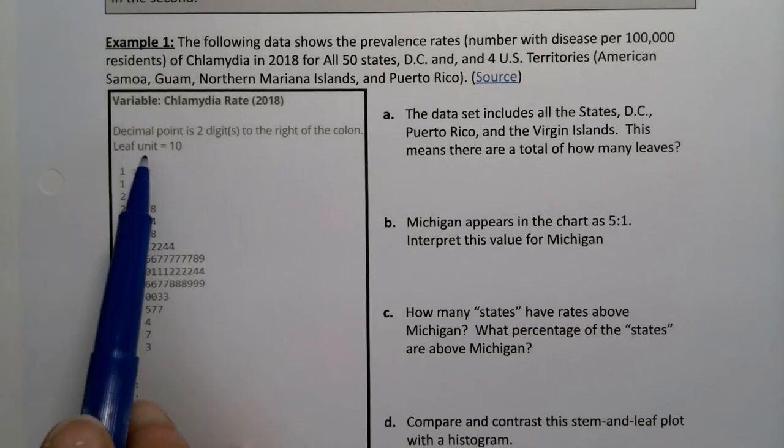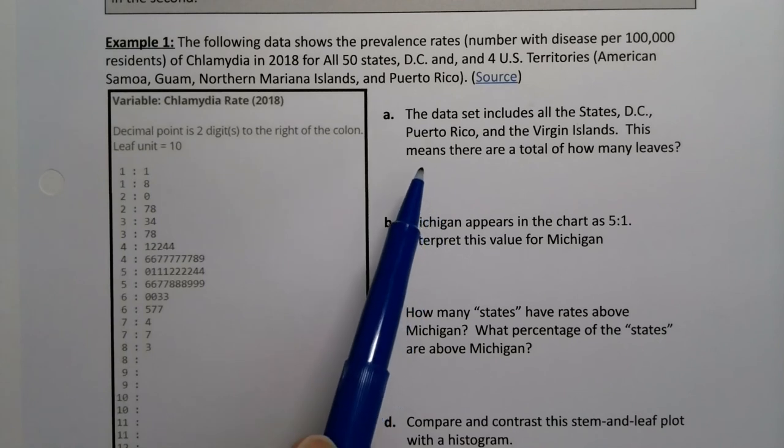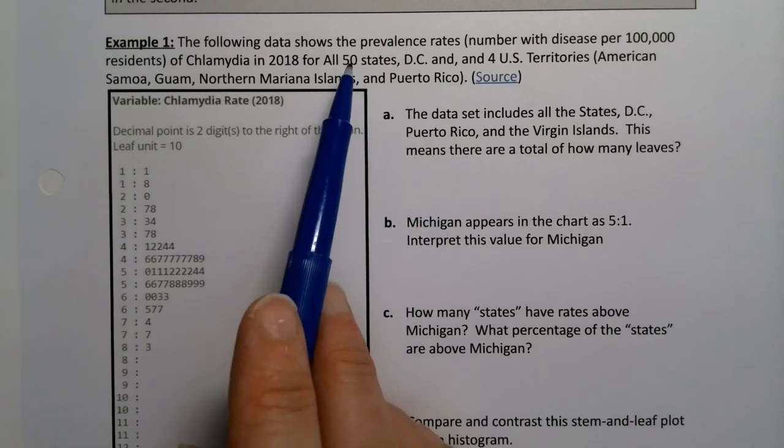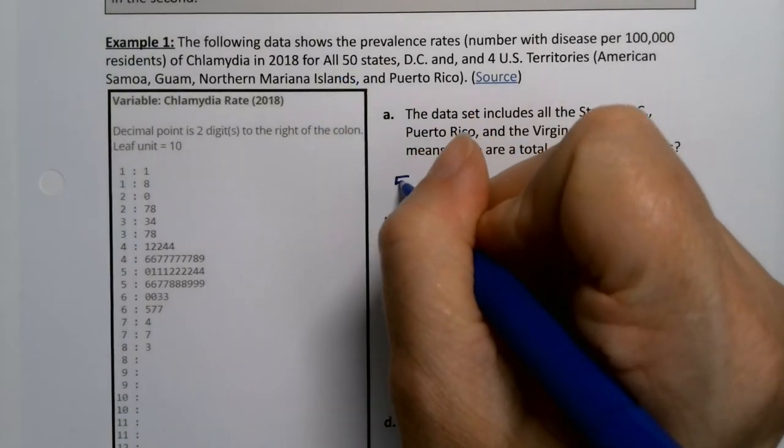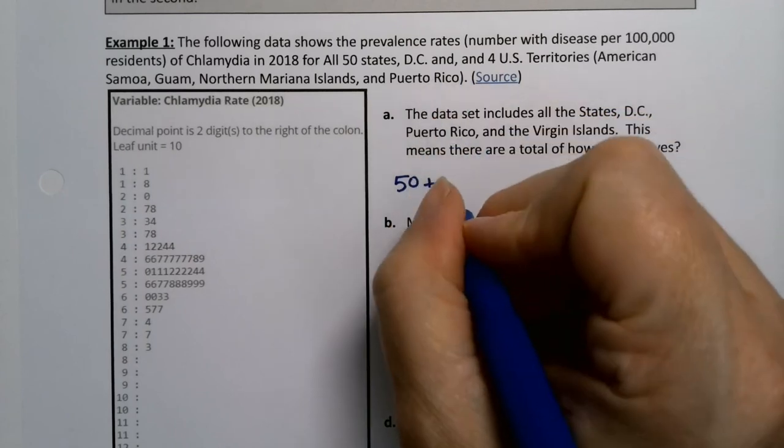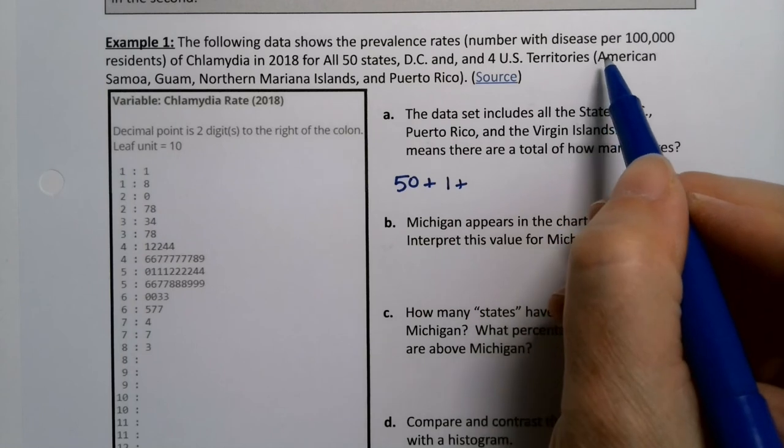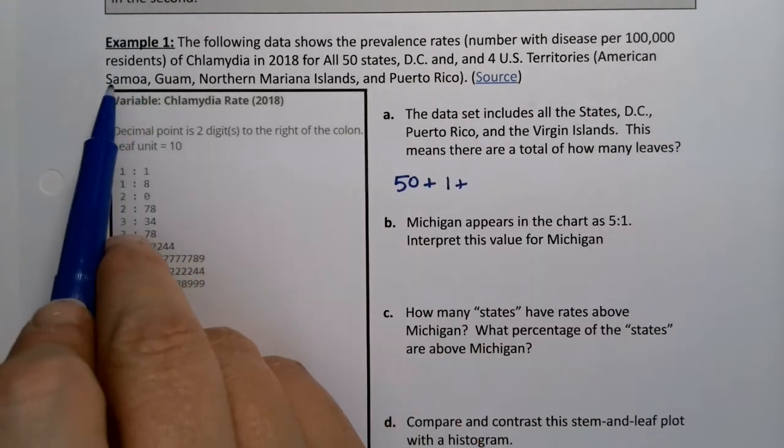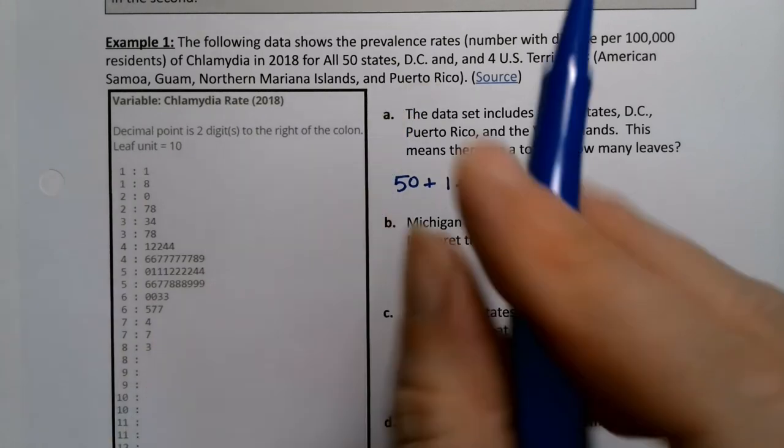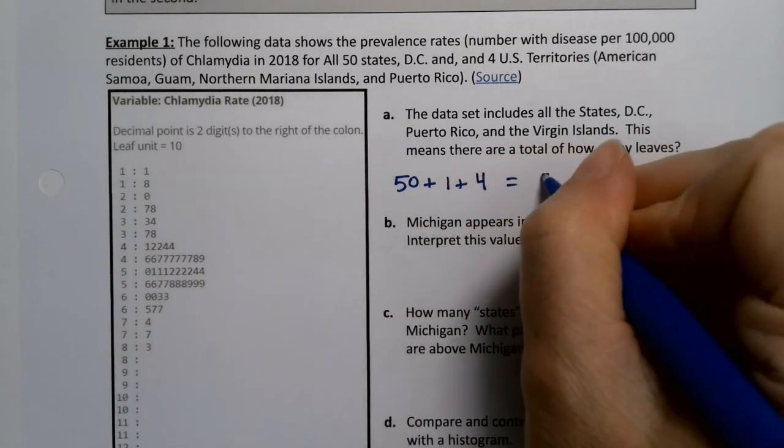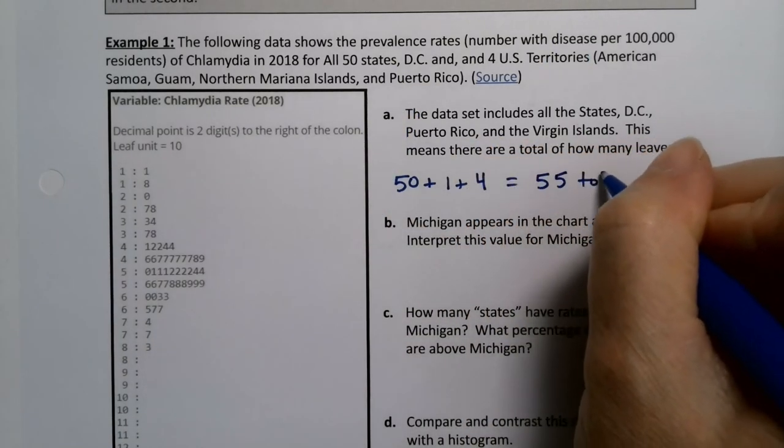Well, you could count them, but you kind of don't have to because you know it's 50 for the states, at least at this point in life. So 50 plus one for DC plus the four US territories, which are the islands: American Samoa, Guam, Northern Mariana Islands, and Puerto Rico. So that would be four more, so that would be 55 total leaves.